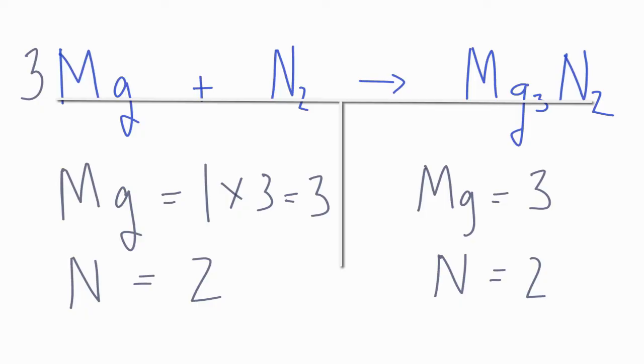So this equation is done. If you want to report your coefficients, you can say three, one, one as the coefficients for the balanced equation of magnesium plus nitrogen yields Mg₃N₂, magnesium nitride. This is Dr. B, and thanks for watching.